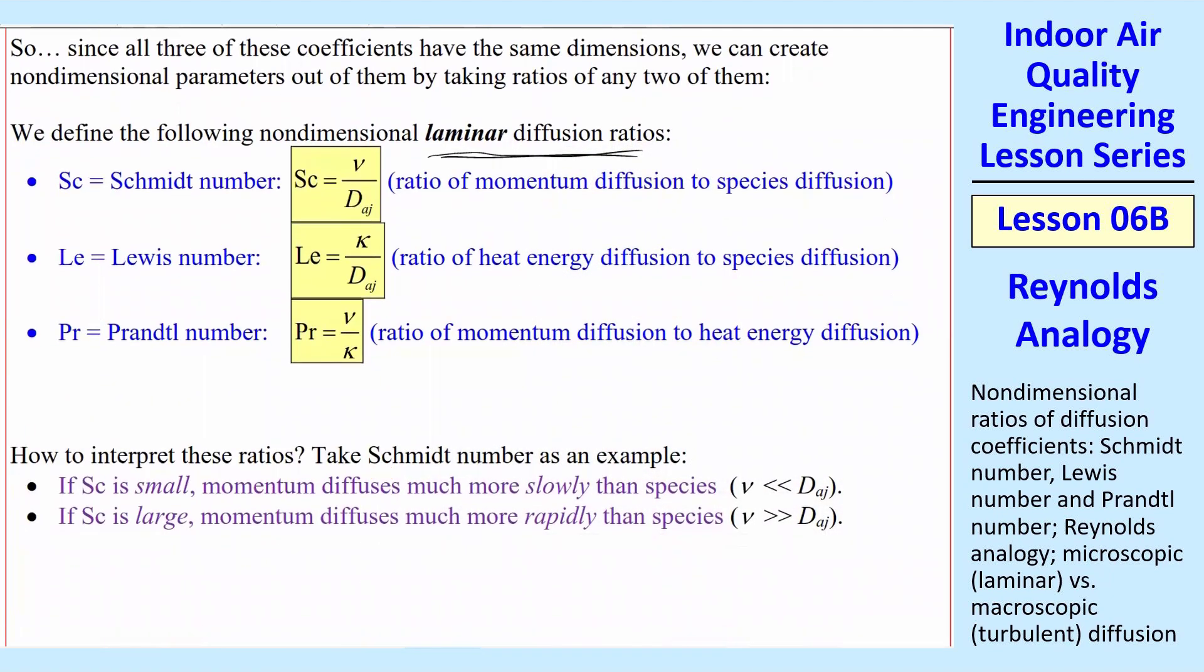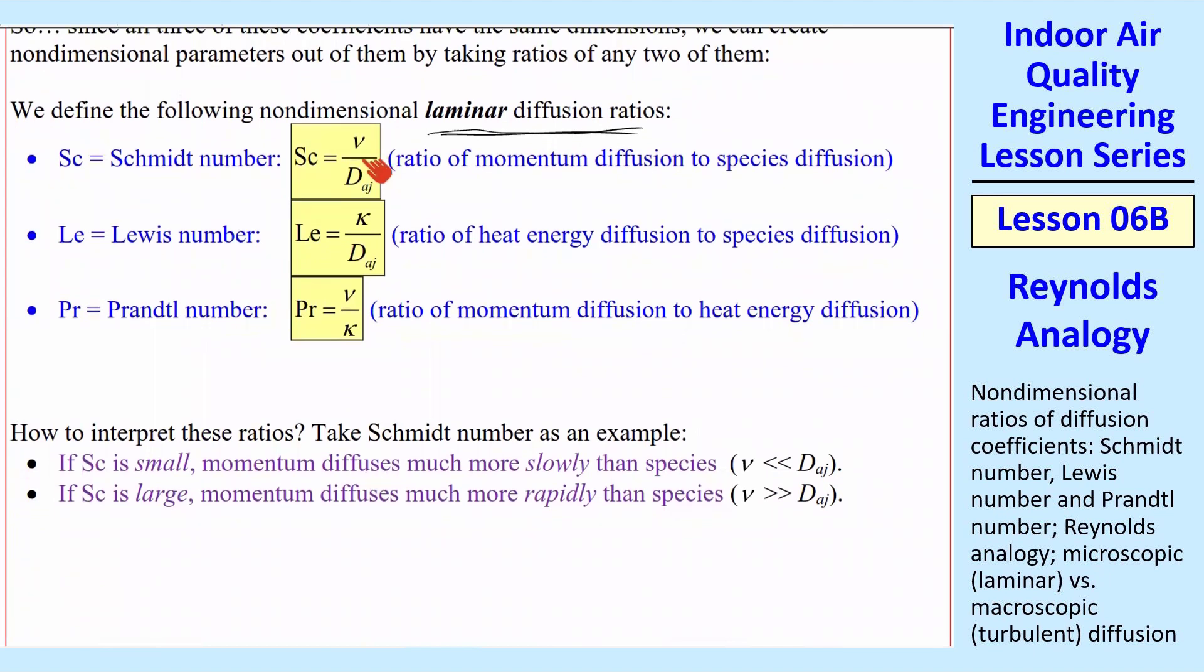So how do you interpret these ratios? Well, let's take Schmidt number as an example. If the Schmidt number is small, that means that nu is small compared to dAj. So momentum diffuses much more slowly than species. And if it's large, it's the opposite effect. And you can argue the same thing with Lewis and Prandtl number.